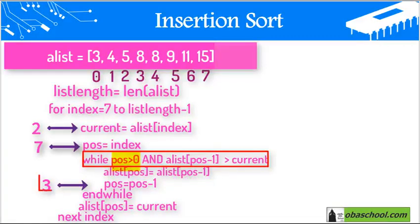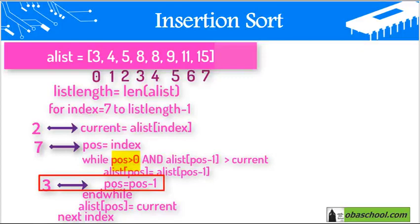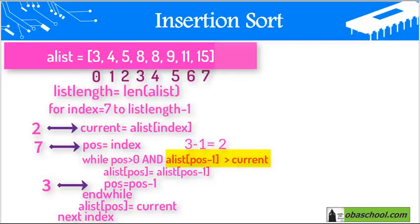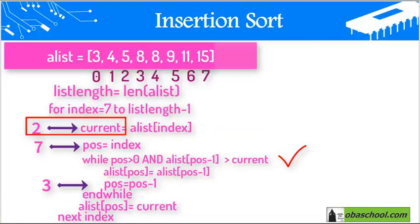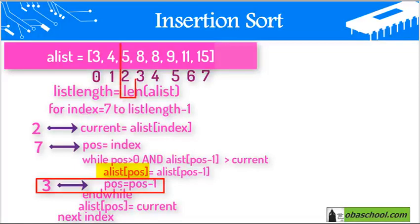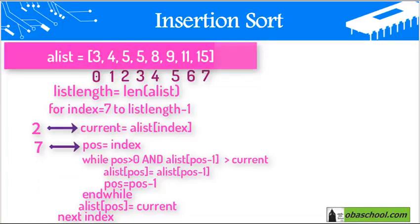We re-enter the while loop. While pose, now equal to 3, is greater than 0 — this condition is true. And a list at pose minus 1, which is 3 minus 1 equals 2. The value found on index 2 is 5. Is 5 greater than the current 2? It's correct, so we enter the while loop. We put on index 3 the value found on index 2, which is 5. Then we change pose to pose minus 1, which is 3 minus 1 equals 2.